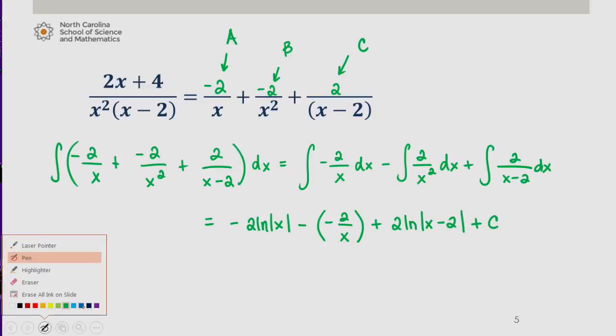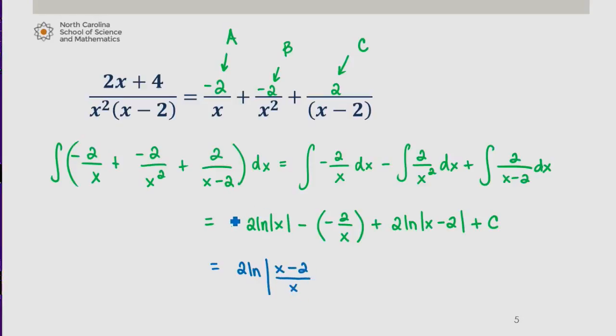Using log laws, we can consolidate the natural log terms, which gives us 2 times the natural log of absolute value of x minus 2 over x, we note this coefficient is negative 2, plus 2 over x, plus our constant C.